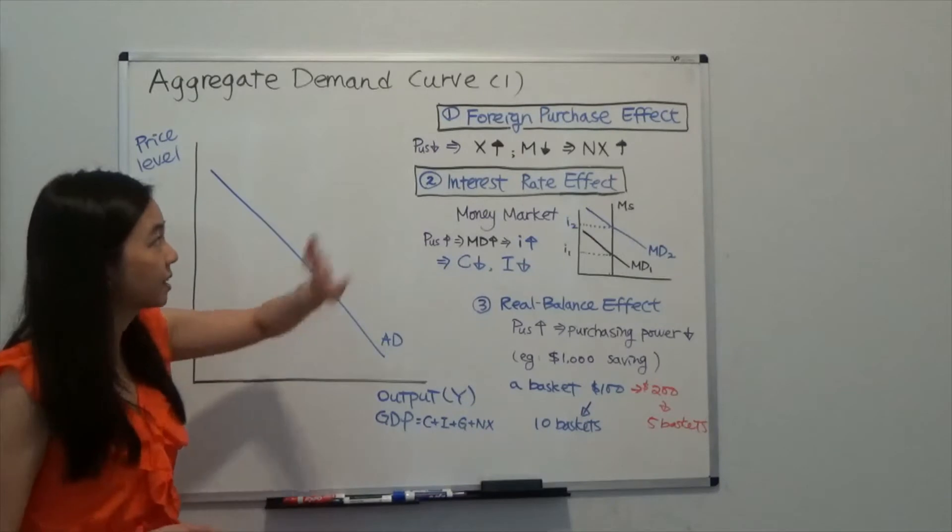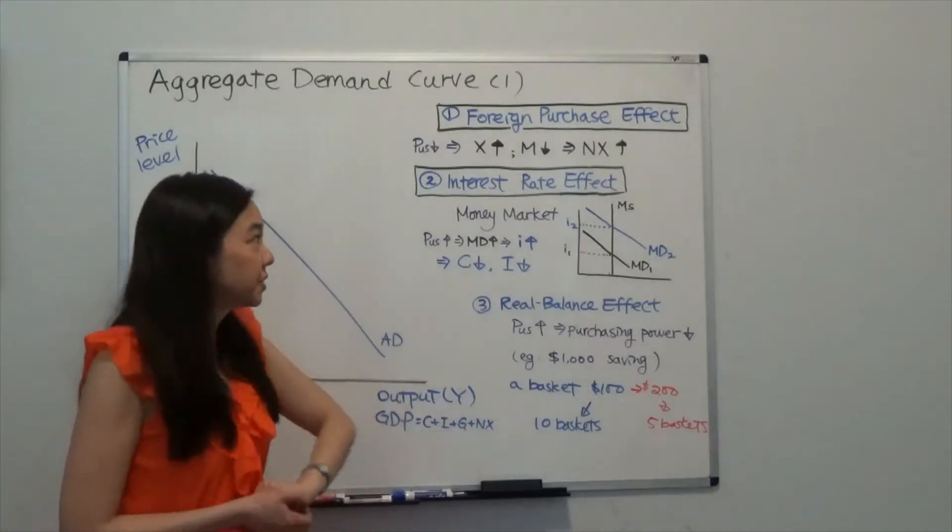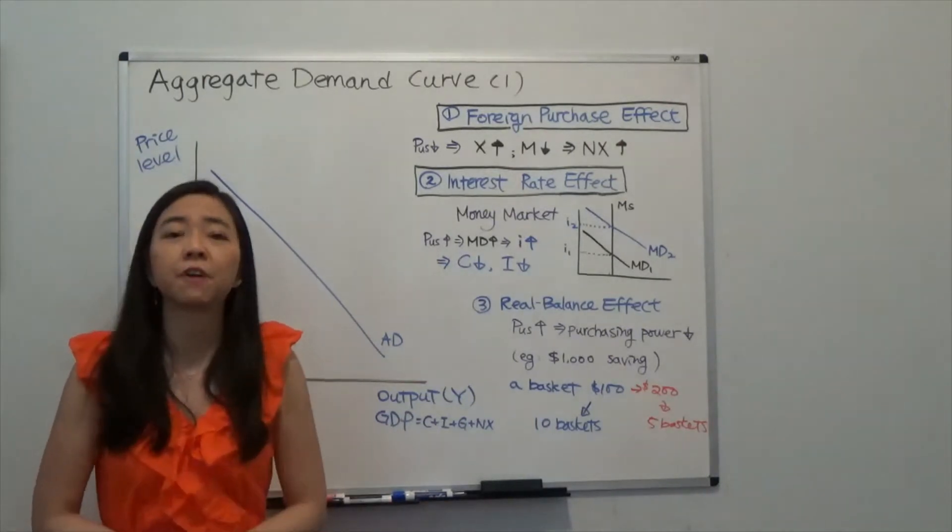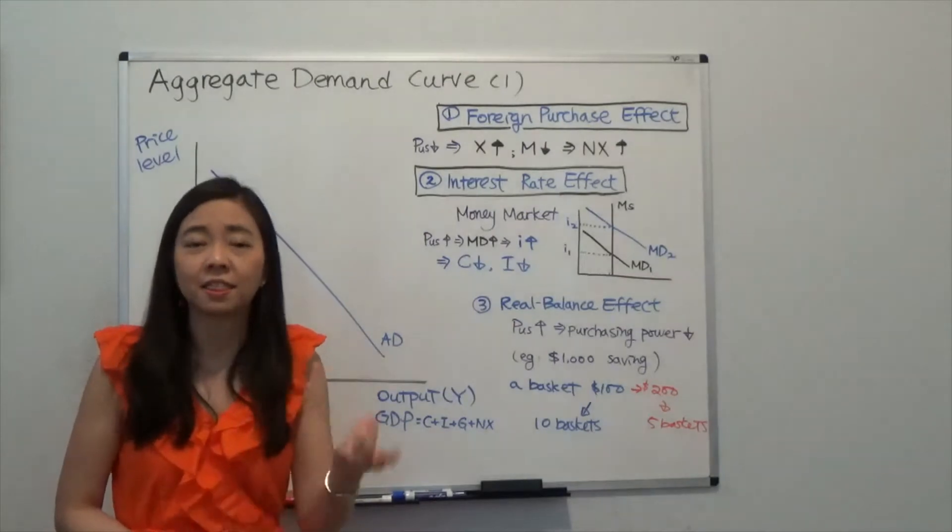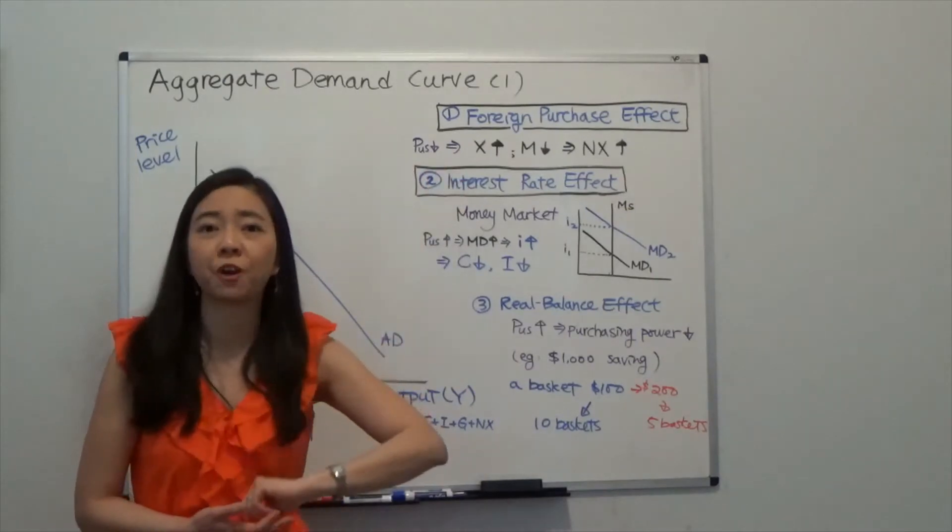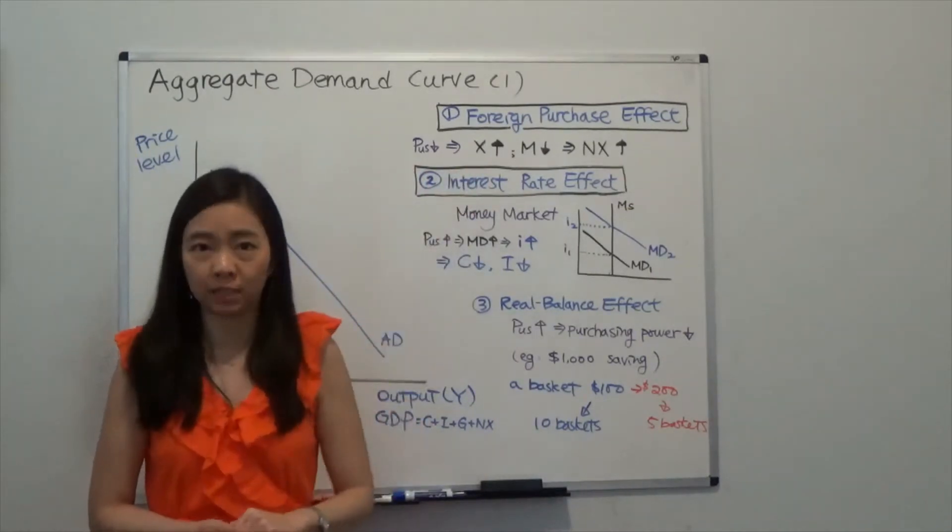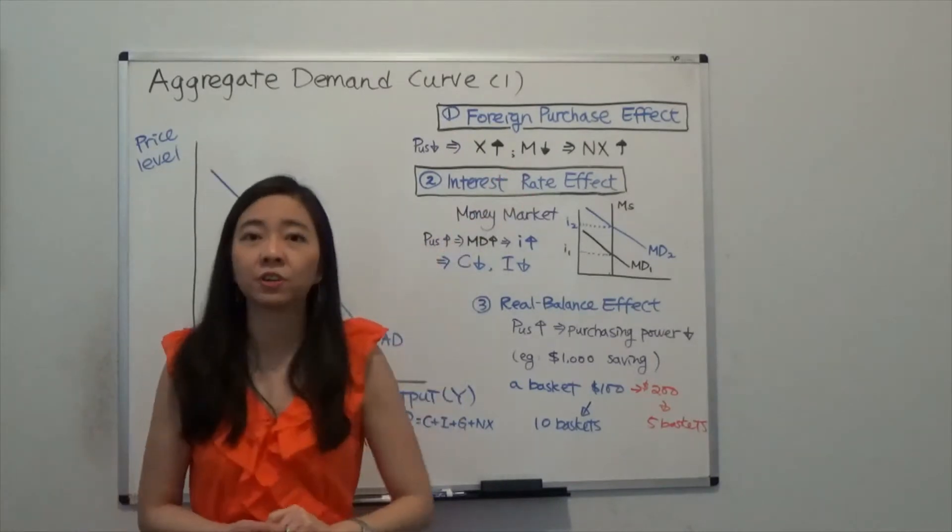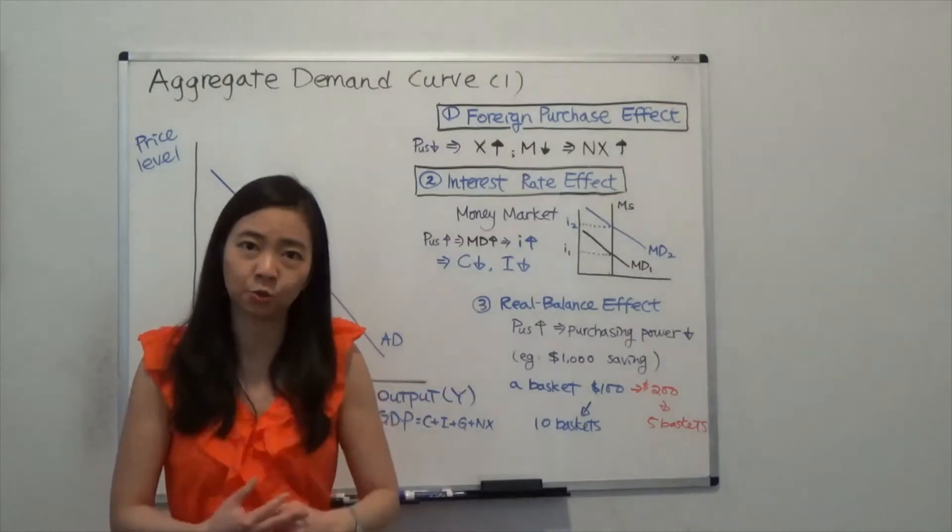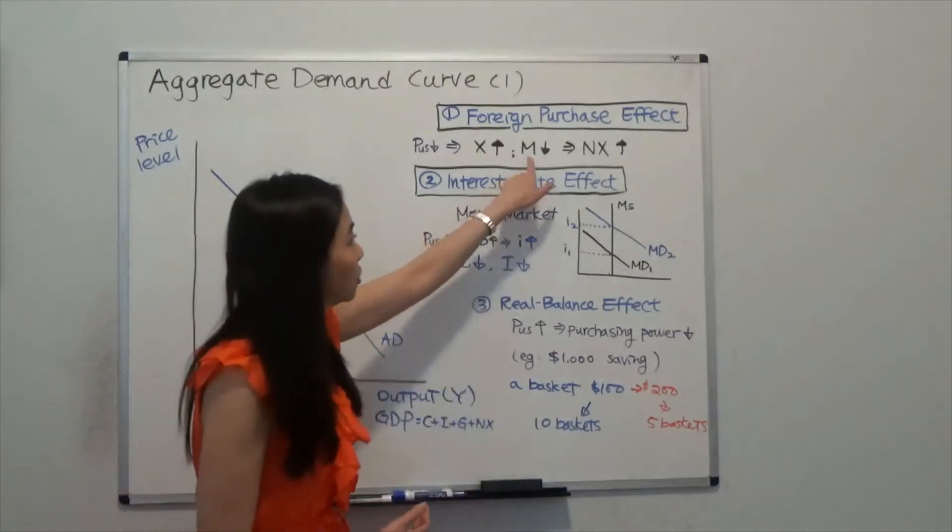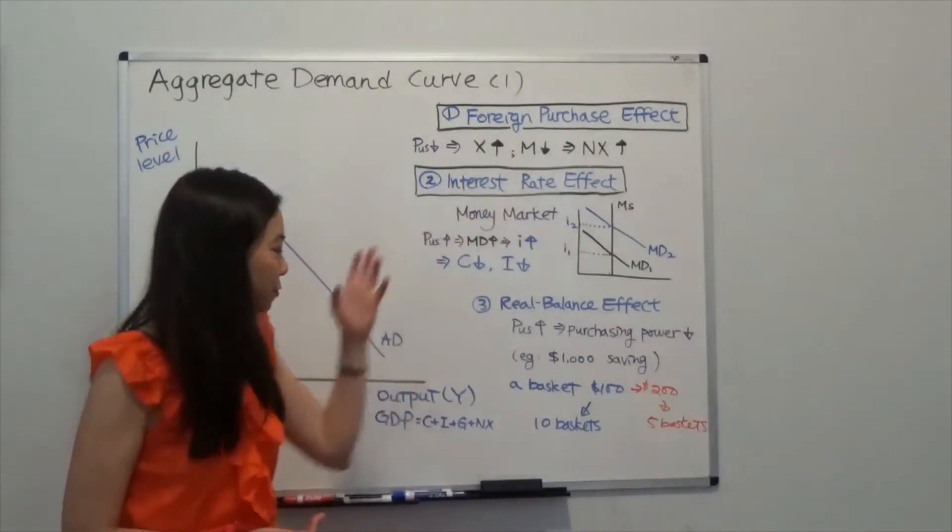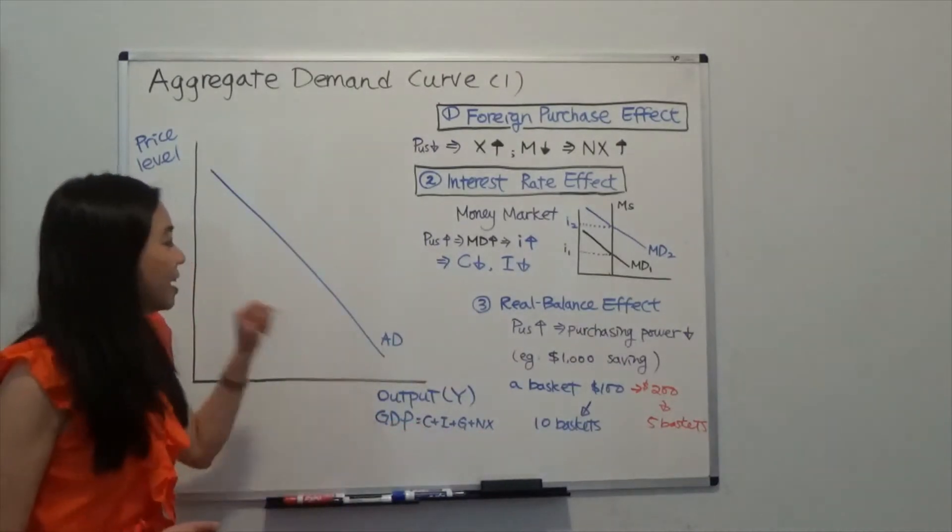Here are three reasons for that. The first is foreign purchase effect. Think about this: if the price level in the U.S. goes down, meaning if our goods are relatively cheaper than foreign goods, then that is going to attract foreign consumers to buy more of our goods and increase our export. At the same time, because the price level in the States is lower, that is going to cause U.S. consumers to prefer U.S. goods than foreign goods, lowering the import. Those are going to increase our net export. And if you remember, because net export is a part of GDP, therefore your GDP is going to go up.